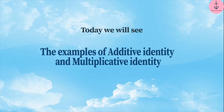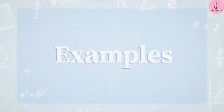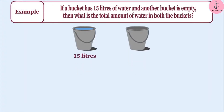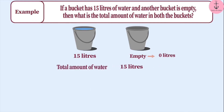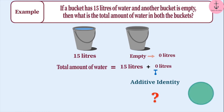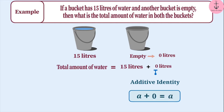Today we will see examples of additive identity and multiplicative identity. If a bucket has 15 litres of water and another bucket is empty, what is the total amount of water in both buckets? The first bucket has 15 litres and the second has 0 litres. To find the total, we add: 15 litres plus 0 litres. Since 0 is the additive identity, when any number is added to 0 the result is the same number. Therefore, the total amount of water is 15 litres.